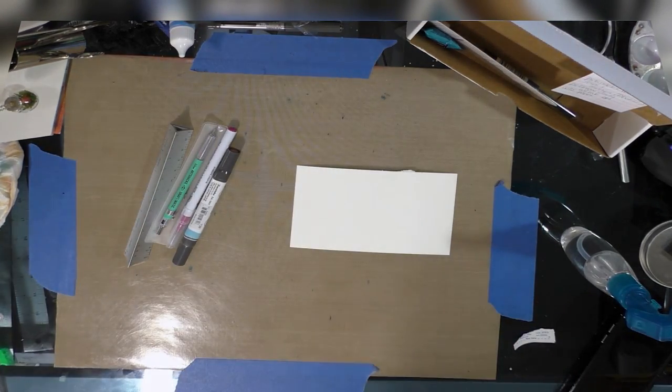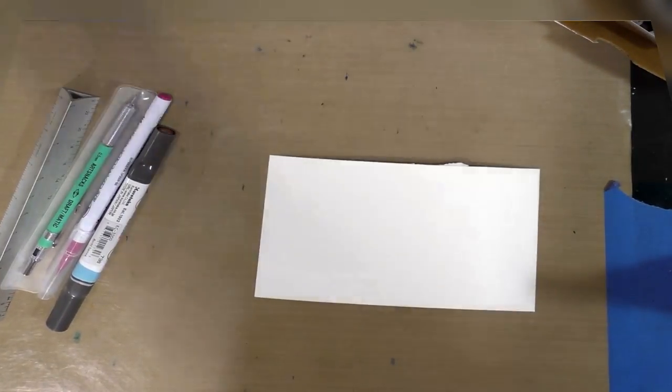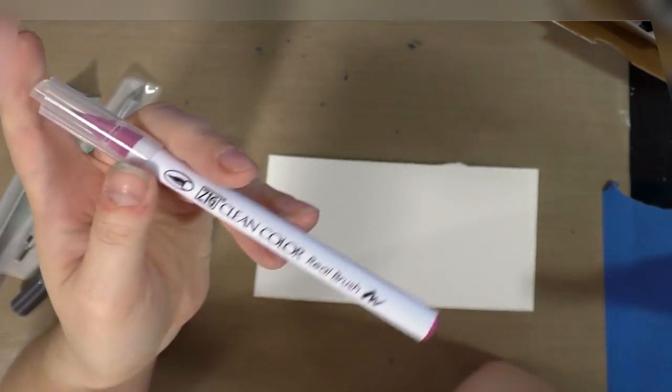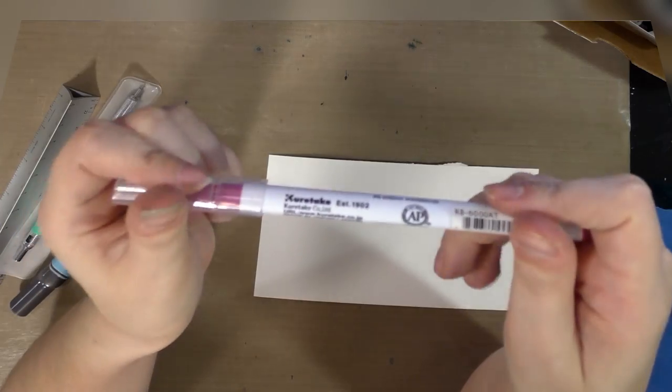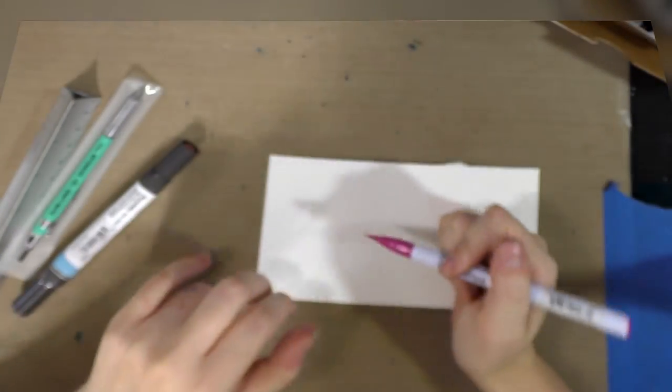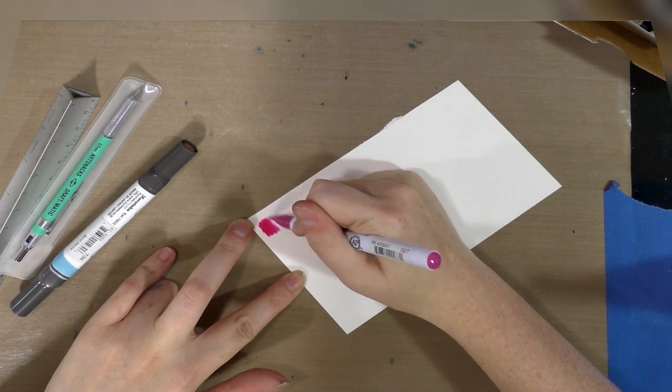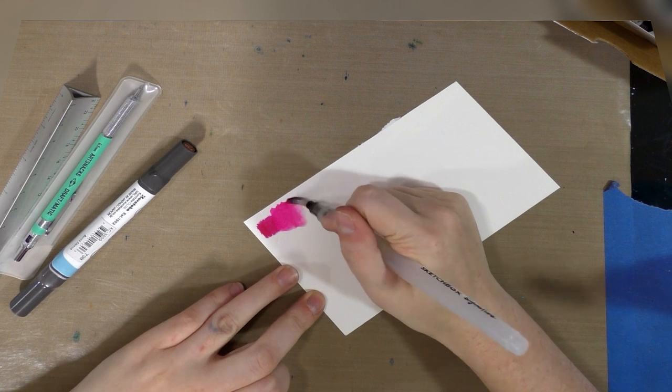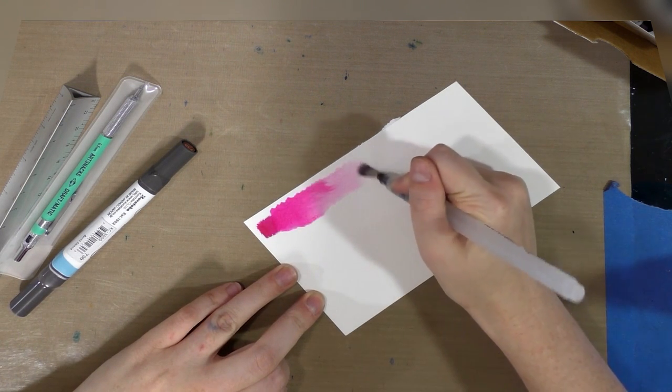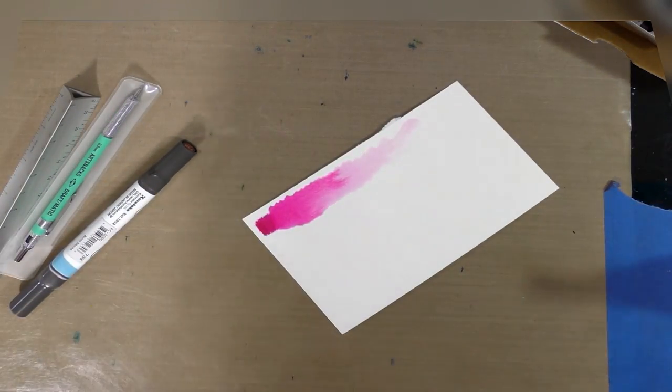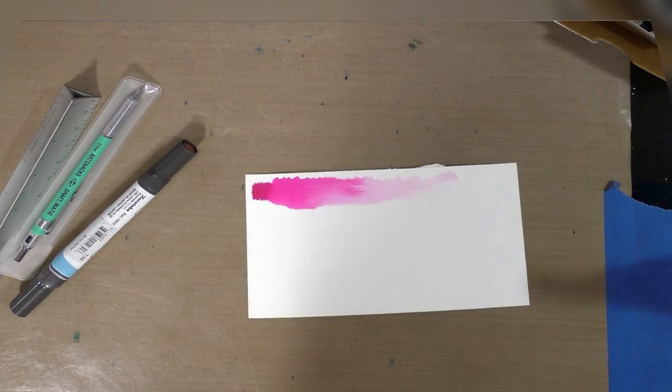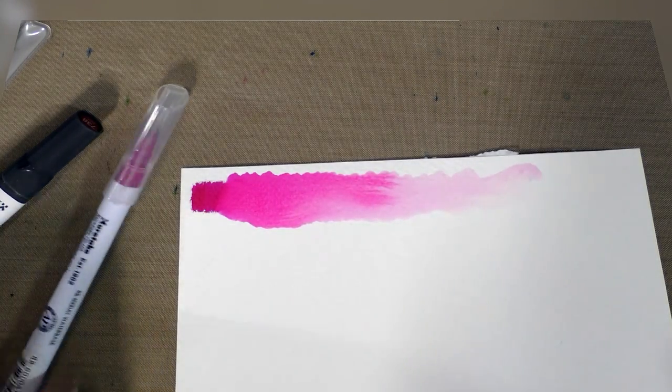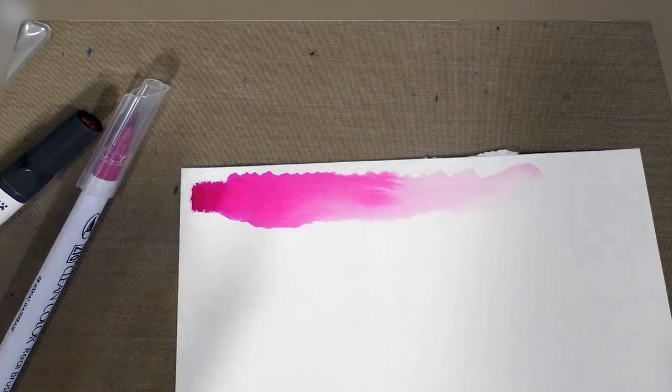We're going to get started with the Kuretake Zig Clean Color Real Brush. Clean Color is actually a line of brushes they make, and there's four different types of these pens. The Real Brush has individual bristles, sort of like a Pentel Pocket Brush. These are water-based and can be used like watercolors. That pink was actually a really good color for that. We're using Fabriano watercolor paper. We're getting nice color dispersion. It has not separated out into individual dyes or colors. It's really a lovely color.